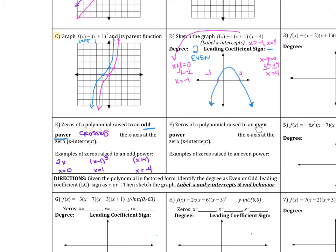Now if a polynomial is raised to, zeros of a polynomial are raised to an even power, then it's going to bounce or touch the x-axis only. So it does not cross. It bounces or touches the x-axis at that zero or x-intercept.